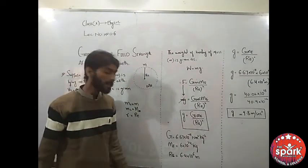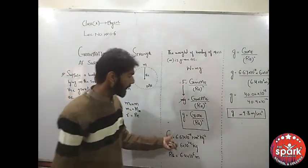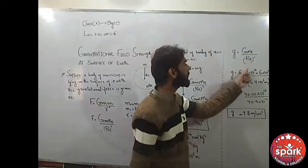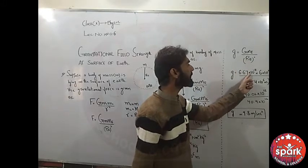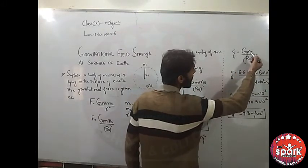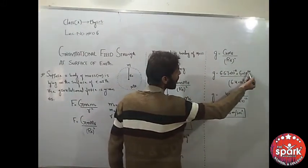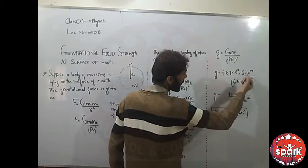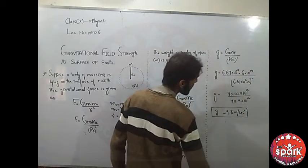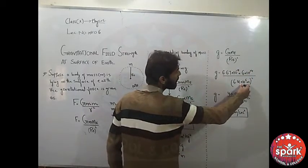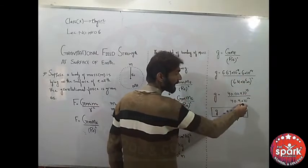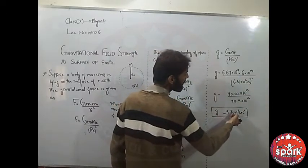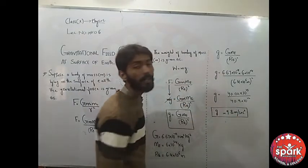You can put these values in this formula: g = G*Me/Re². Here G is 6.67×10^-11, mass of Earth is 6×10^24 kg, and radius squared is (6.4×10^6 m)². After calculation, you will get g = 9.8 m/s².